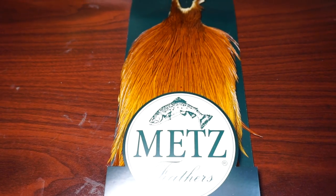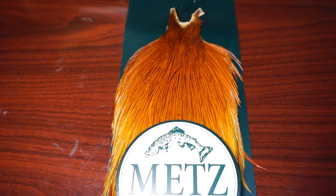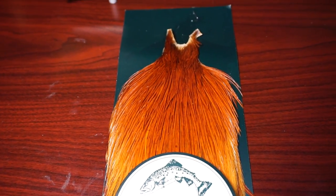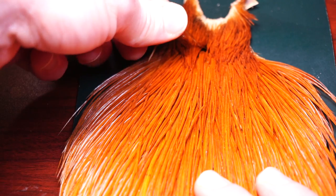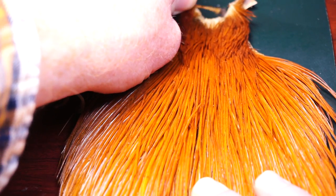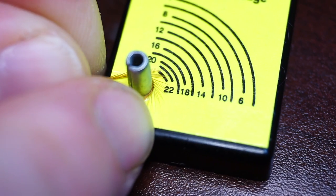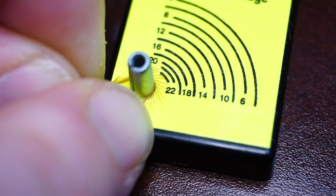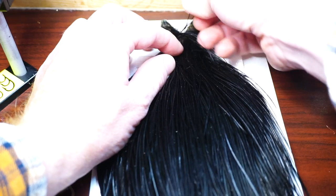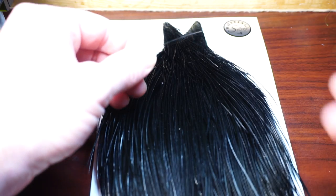I'm using a Whiting silver cape, however they're pretty expensive and you could probably get away with a cape like this Metz number three grade. Just make sure that the feathers on top of the cape are long enough to work with because we're going to need very fine ones. As you can see, we're getting about a 22 to 20 size with this feather, which should be fine.